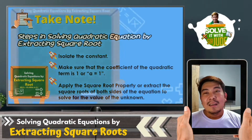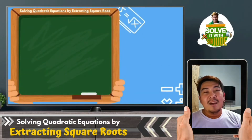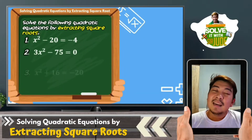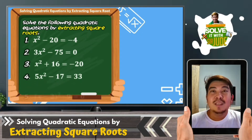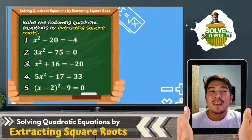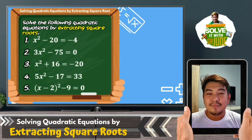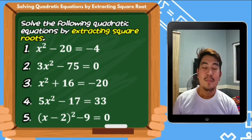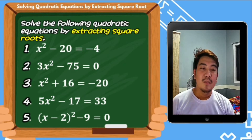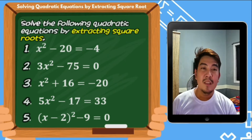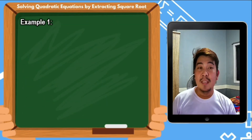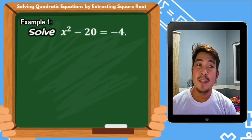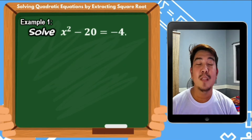Now let us have some examples. Here are the examples we need to solve using extracting square roots. Let us start with example number 1: we need to solve x squared minus 20 equals negative 4.